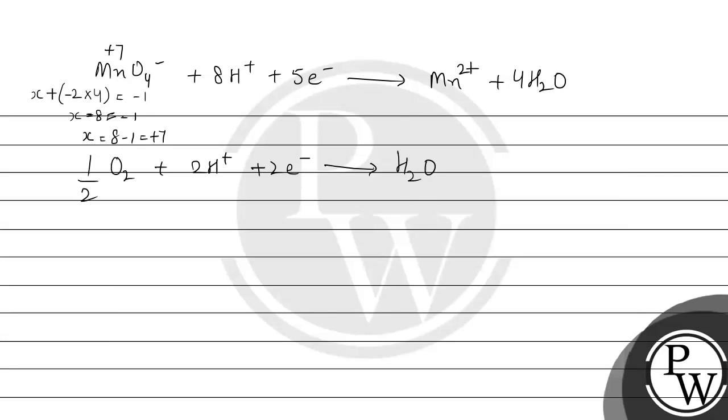In MnO4-, manganese goes from +7 to +2. And here we can see the oxidation state will decrease. Decrease in oxidation state means reduction is the process. Reduction.